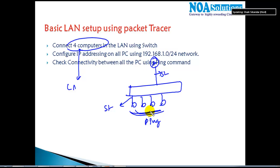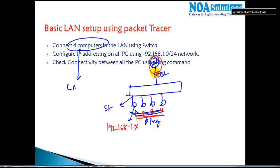I'm going to configure IP addressing on them. I'll be using the 192.168.1.0 network, assigning 1.1, 1.2, 1.3, and 1.4 to each PC. We'll connect the routers later when we get into more advanced topics. Finally, we will verify that PC 1.1 can communicate with 1.2, 1.3, and 1.4 by using ping commands.